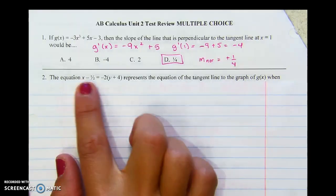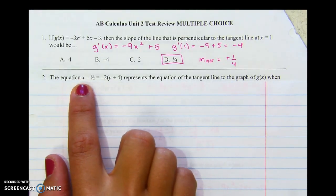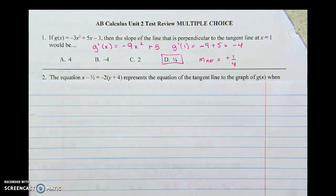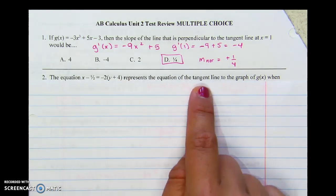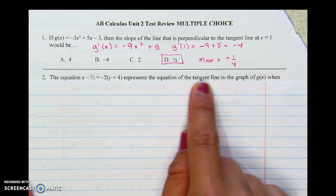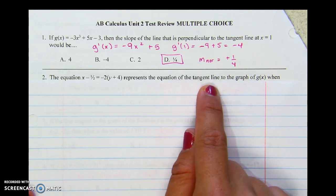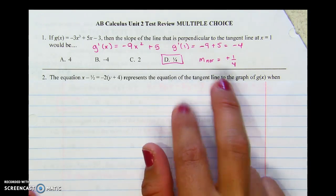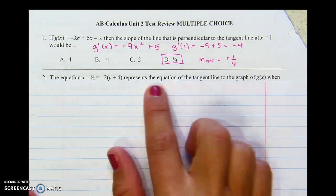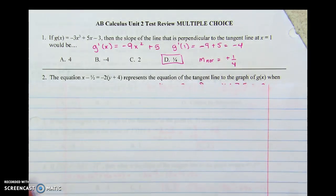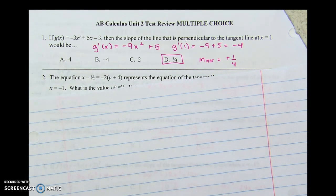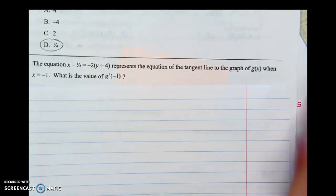Question two, this equation is all mixed up. I got x minus one half equals negative two times y plus four, represents the equation of the tangent line. Half the test is the equation of the tangent line. The other half is analyzing f and f prime, going back and forth between the original and the derivative. When, and then it gives us an x value, here, I don't want you to see the answer.